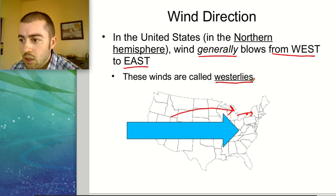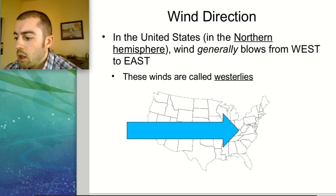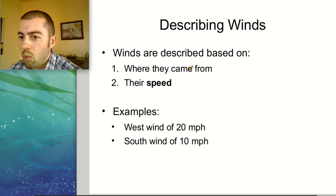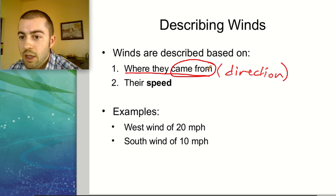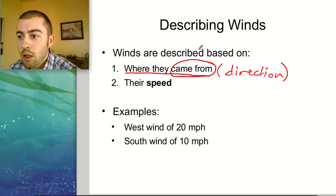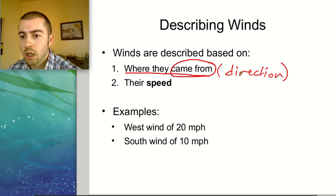These winds are called westerlies. When describing winds, we base the name on where they came from — their direction of origin. Winds coming from west to east are called westerlies because they came from the west. You do not describe winds based on what direction they're blowing toward; you describe them based on what direction they came from.